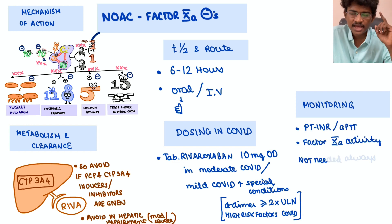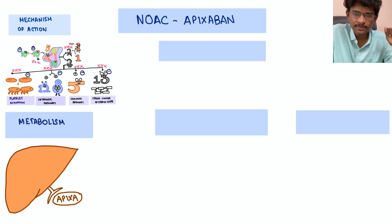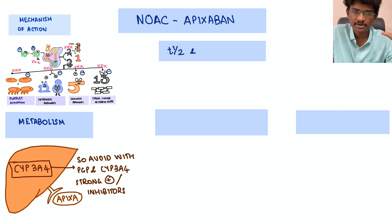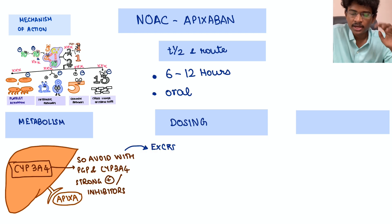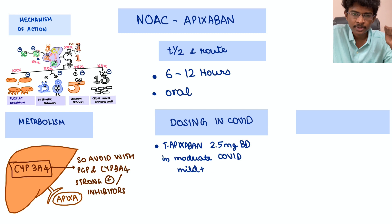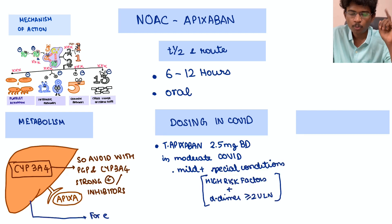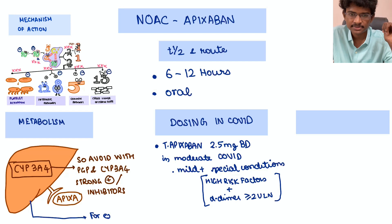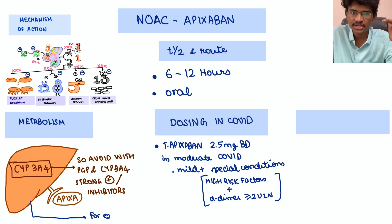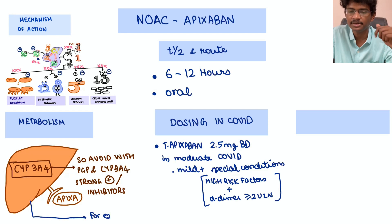Apixaban is also a factor Xa inhibitor, also cleared by the liver via CYP3A4 — same drug interactions should be considered. Half-life is 6 to 12 hours. The dose is apixaban 2.5 mg twice daily. Dosing must be adjusted based on renal parameters: stop the drug if the patient develops acute kidney injury. In CKD without dialysis, reduce the dose; in CKD patients on hemodialysis, the dose is increased as apixaban is partially dialyzable.